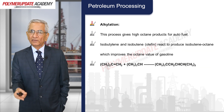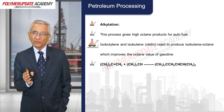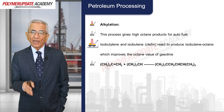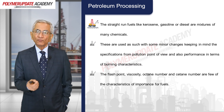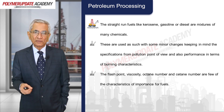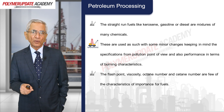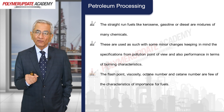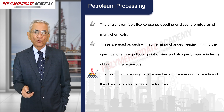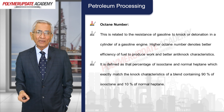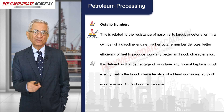In alkylation, as the name suggests, an alkyl group is added. Isobutylene and isobutene — unsaturated olefinic compounds — react to produce isobutene octane, a branched material which improves the octane value of gasoline. Straight-run fuels like kerosene, gasoline, or diesel are mixtures of many chemicals. Important characteristics for auto fuels include flash point, viscosity, octane number, and cetane number.